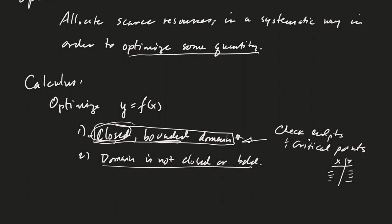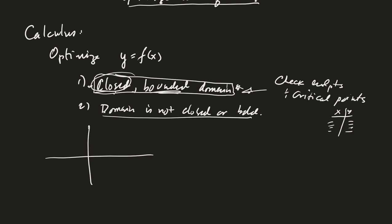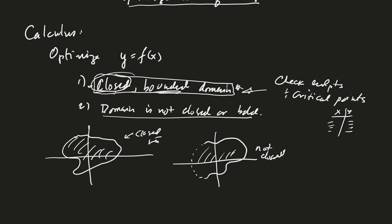So, for example, if I have a set in two dimensions that looks like this, this set would include the boundary, and so this is a closed set. And then this set, if I don't include some of the boundary points, then it's not closed. Of course, in one dimension, if you only have one variable, then closed means that you have an interval that includes the endpoints.